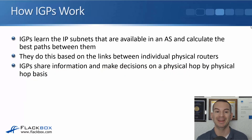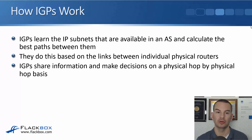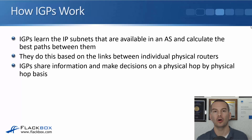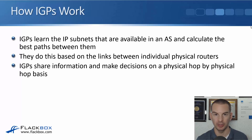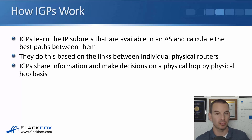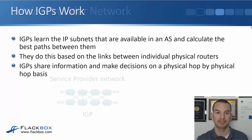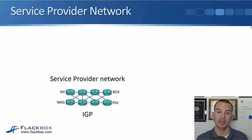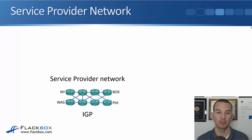Pretty soon all of the routers will know the routes to get to everywhere inside that network. IGPs learn the IP subnets available within an autonomous system and calculate the best paths between those IP subnets based on the links between the individual physical routers. IGPs share information and make decisions on a physical hop-by-physical-hop basis — from R1 to R2 to R3 and so on — and all the routers learn about all the best paths to get everywhere, physical router by physical router.